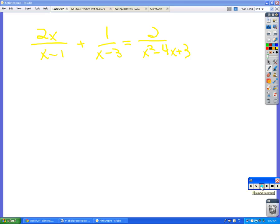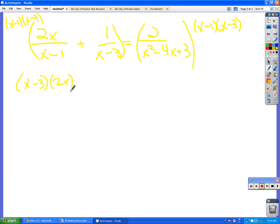So, same as the other one. Since I had a 4 on the bottom and a 5 on the bottom, I multiplied by 4 times 5. So since I have an x minus 1 on the bottom and an x minus 3 on the bottom, I'm going to multiply by x minus 1 and x minus 3. And then I have to multiply over here by x minus 1 and x minus 3. So when I multiply this first term times x minus 1 and x minus 3, the x minus 1's cancel because I have one on the top and one on the bottom. So that leaves me with x minus 3 times 2x.